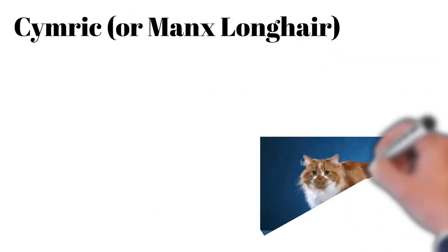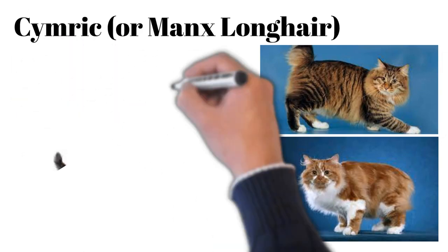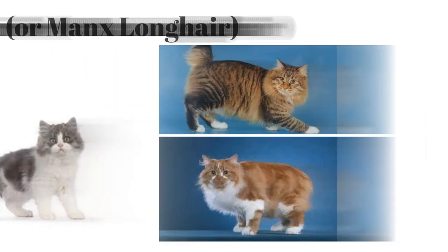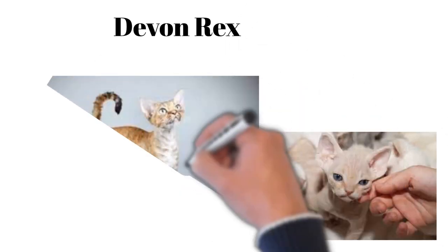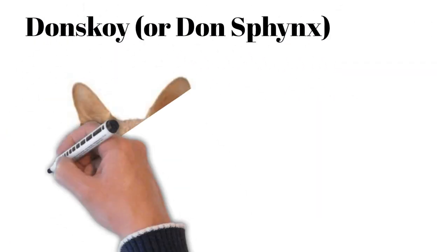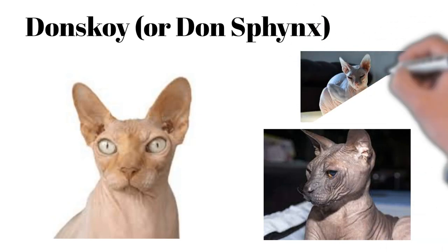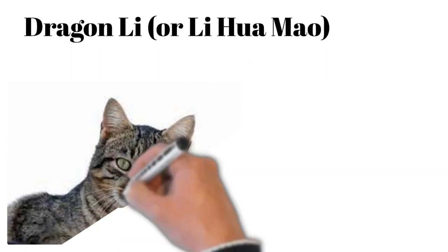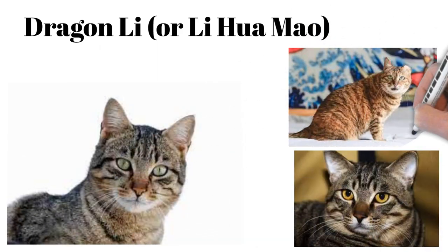Cymric or Manx Longhair: tailless or short-tailed, affectionate, playful, good with children. Devon Rex: elf-like appearance, curly coat, mischievous, people-oriented and loving. Don Sphynx: hairless, friendly, intelligent, enjoys being close to humans. Dragon Lee or Lihua Mao: native Chinese breed, agile, independent, loyal to family.